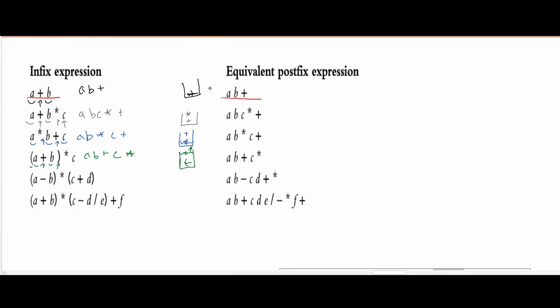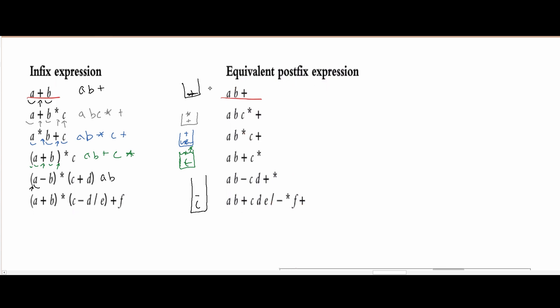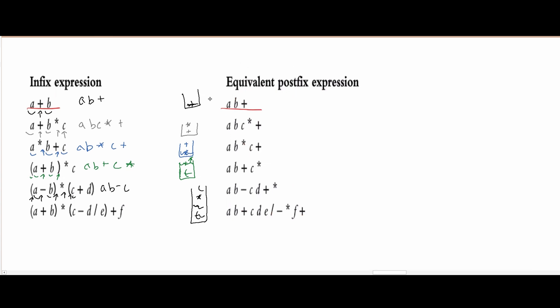Looking at the next one — A minus B times C plus D with multiple parentheses. So for this one, we have our first open parentheses. Our stack is going to start with the first parentheses. Then we have the operand A, then we push the minus into our stack. We have B. Then we have the closed parentheses, so we're just going to pop the minus and get rid of that, then get rid of the open parentheses. Now we're going to deal with the multiplication — put that in the stack. Then we have another open parentheses, followed by a plus, then D. Then we come across the closed parentheses, so we're going to pop everything: we pop the plus, then we come to the open parentheses, and then the multiplication. That is how we would get the equivalent postfix expression.